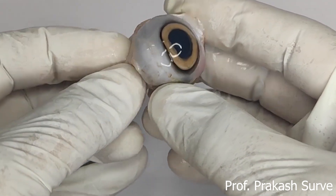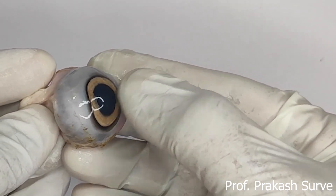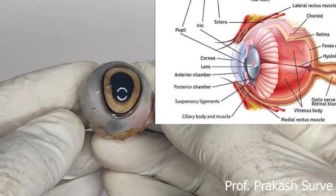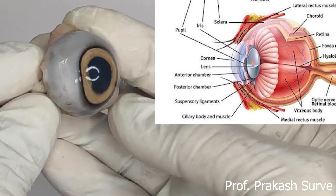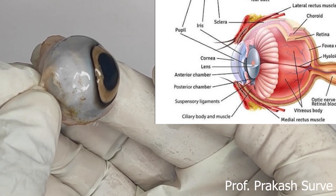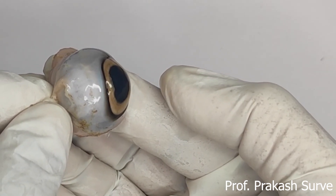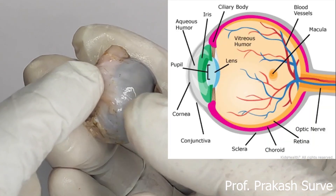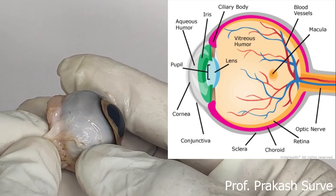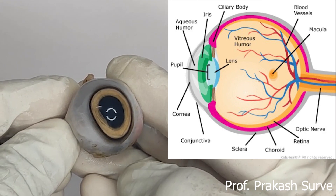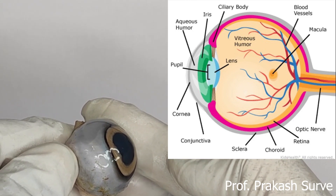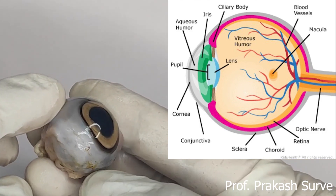Anteriorly, at the front side, there is the cornea. It is a thick and transparent part of the sclera that is slightly bulged out, which helps in focusing the light on the retina. The sclera is provided with blood vessels, but the cornea is devoid of blood vessels. The cornea is nourished by the aqueous humor.